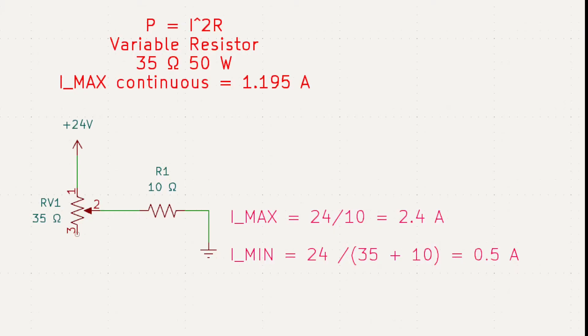From circuit theory, we know that power is equal to I squared R. Our variable resistor is 35 ohms, 50 watts. If you do the calculations, you're going to find out that the maximum continuous current is 1.195 amps.